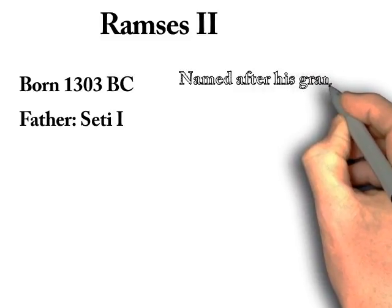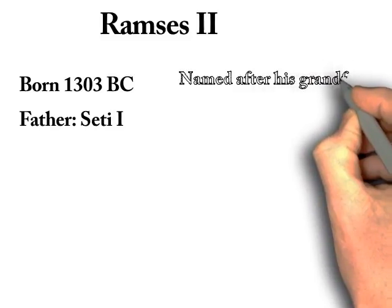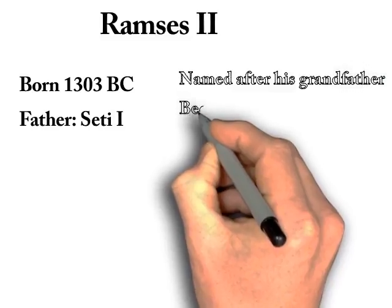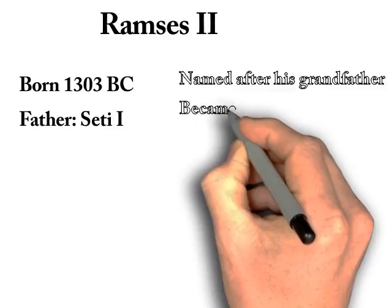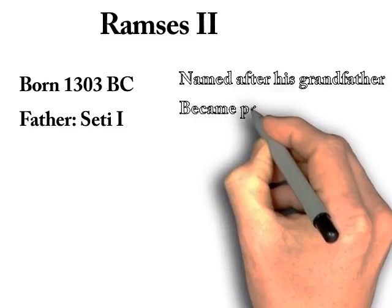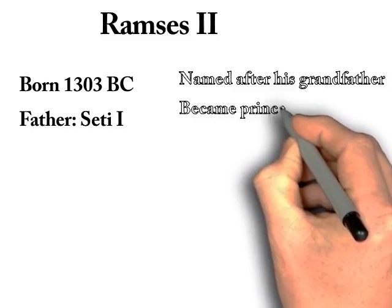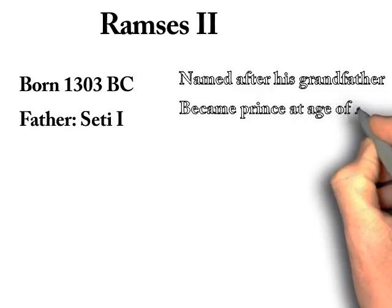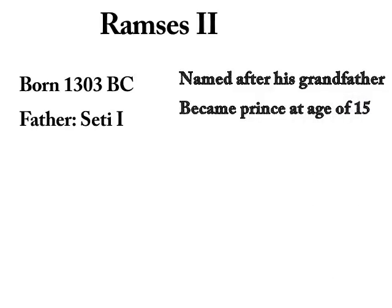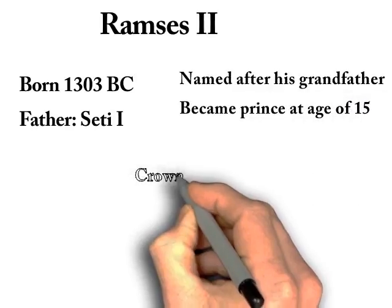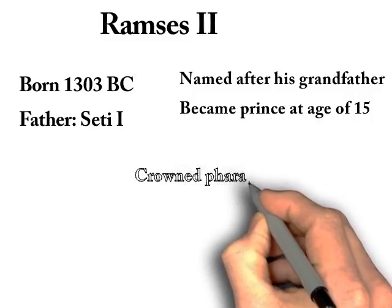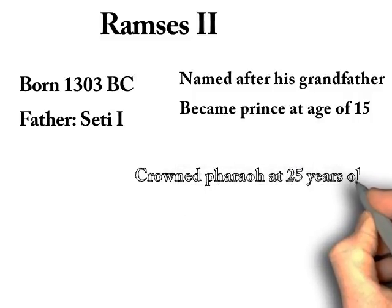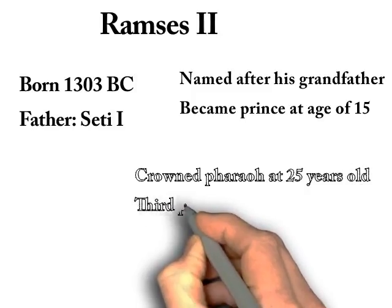As a prince, Ramses joined his father in the military and began leading battles on his own by the age of 22. When Ramses was 25 years old, his father passed away and he was crowned king of Egypt in 1279 BC. He was the third pharaoh of the 19th dynasty. During his reign, he led the Egyptian army against several enemies which included the Hittites, the Syrians, Libyans, and the Nubians.